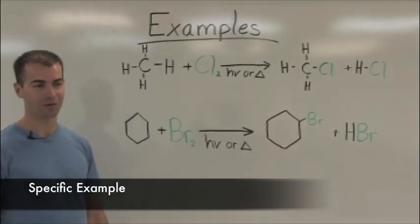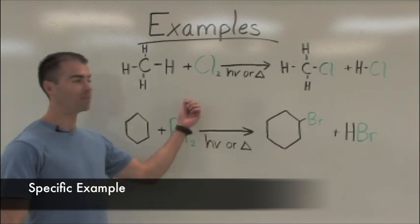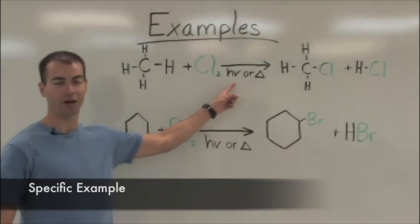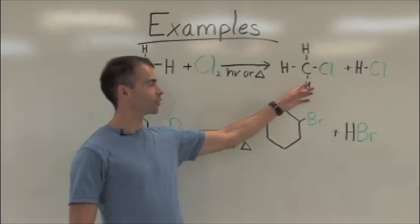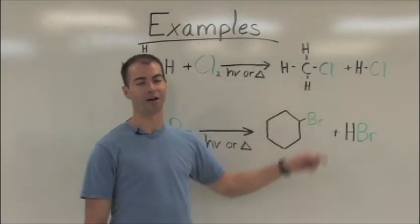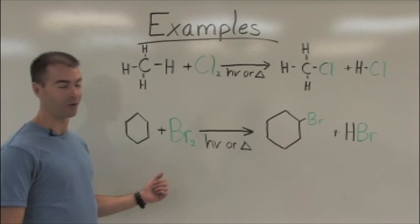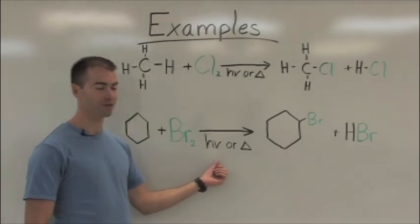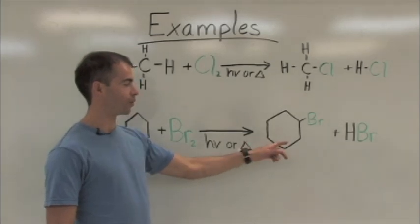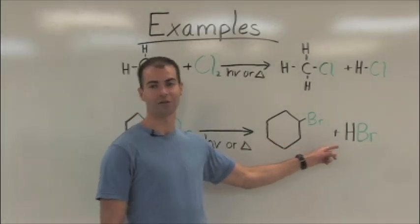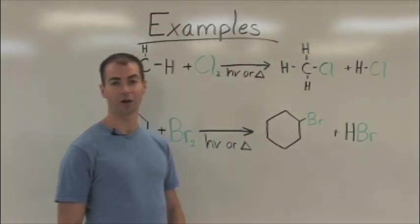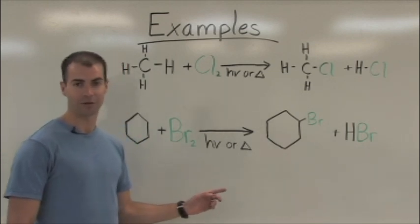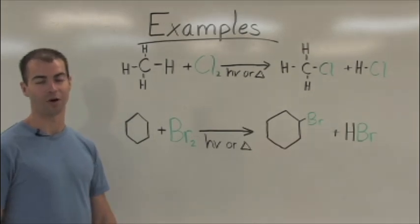Here we have two specific examples. In the first, methane reacts with chlorine under the conditions of heat or light to form chloromethane and hydrogen chloride. In the second example, cyclohexane reacts with bromine, again under the conditions of heat or light to form bromocyclohexane and hydrogen bromide. Take note that these are both just monosubstituted reactions and that polysubstitution with halogens can and does occur.